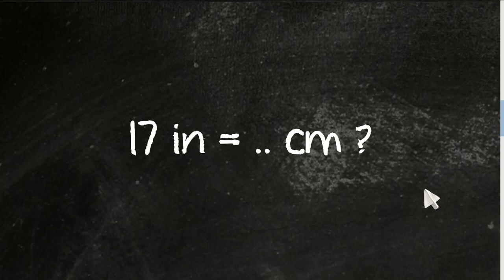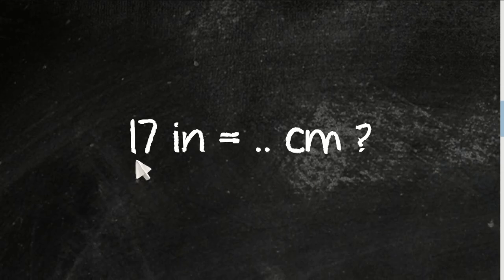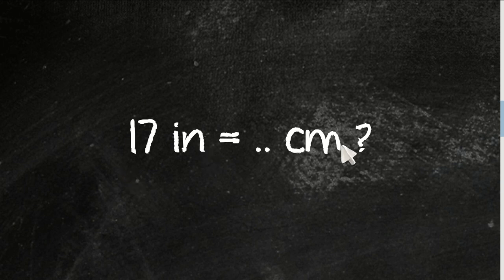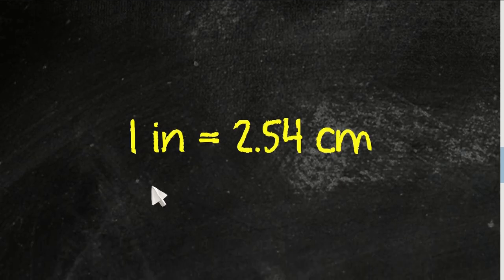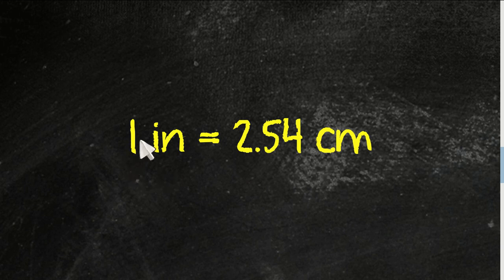Hello everyone, so today I want to show you how to convert inches to centimeters. I choose an example number - I want to convert 17 inches to centimeters. So basically the question is: 17 inches equals how many centimeters? And this is the formula that we'll use to solve the problem: 1 inch equals 2.54 centimeters.